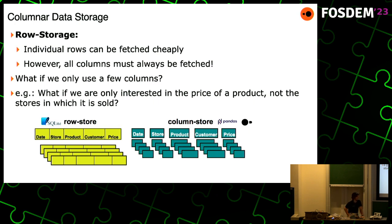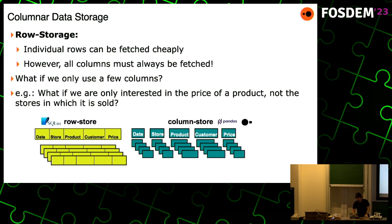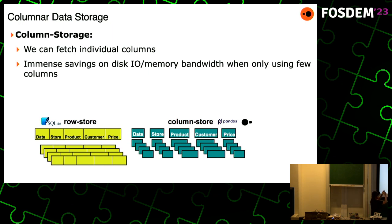Columnar data storage. There are basically two ways: a row store or a column store. SQLite is an example of a row store — you're storing your data consecutively in memory per row. If you want to fetch an individual row, that's cheap because it's contiguous in memory. However, you always have to fetch all the columns. Analytical queries usually have very wide tables but you just want a couple of columns. In a column store, the data of each column is consecutively in memory, so if you want to access just a couple of columns, you can have immense savings on disk IO and memory bandwidth — that's why this format is really optimized for analytics.